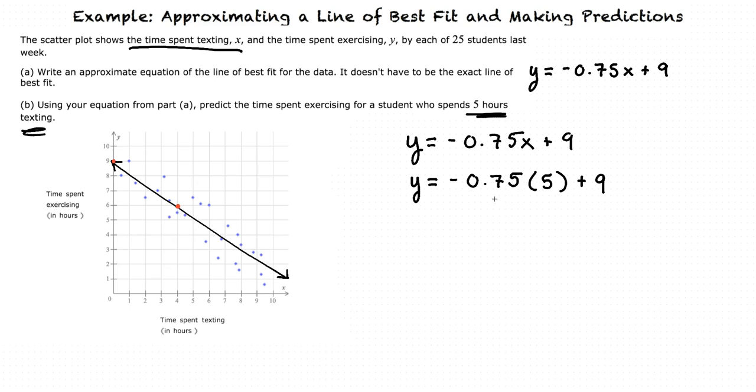Negative 0.75 times 5 is negative 3.75 plus 9, which equals 5.25 hours exercising. We can see this point represented here on our graph. This is our final answer for part B and the final part of our problem.